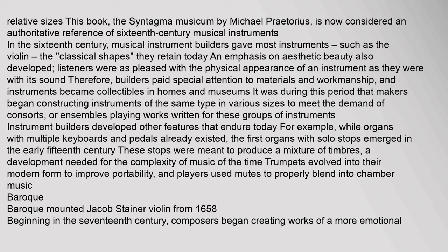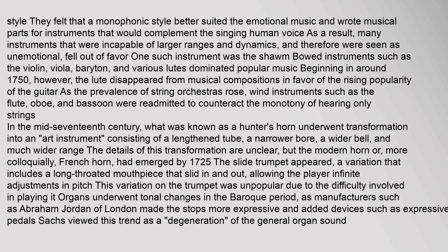Beginning in the 17th century, composers began creating works of a more emotional style. They felt that a monophonic style better suited the emotional music and wrote musical parts for instruments that would complement the singing human voice. As a result, many instruments that were incapable of larger ranges and dynamics fell out of favor. Instruments such as the violin, viola, baryton, and various lutes dominated popular music. Beginning in around 1750, the lute disappeared from musical compositions in favor of the rising popularity of the guitar. As the prevalence of string orchestras rose, wind instruments such as the flute, oboe, and bassoon were readmitted to counteract the monotony of hearing only strings.